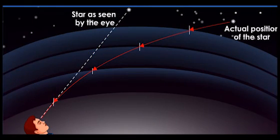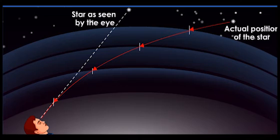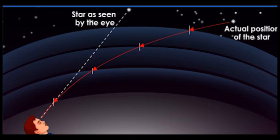In the field of astronomy, it is important to chart the position of stars correctly. Observations using an optical telescope from the Earth's surface always incur an error due to refraction of starlight through the Earth's atmosphere. The higher up in the atmosphere, the more rarefied the air, meaning upper atmospheric layers are optically less dense than layers near the Earth's surface. The starlight is refracted towards the normal as it gets closer to the Earth's surface, making the star appear higher than it actually is.